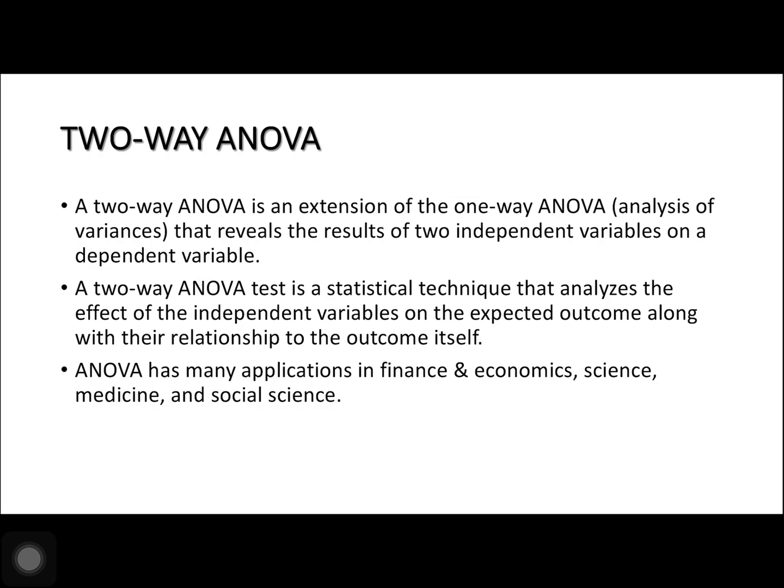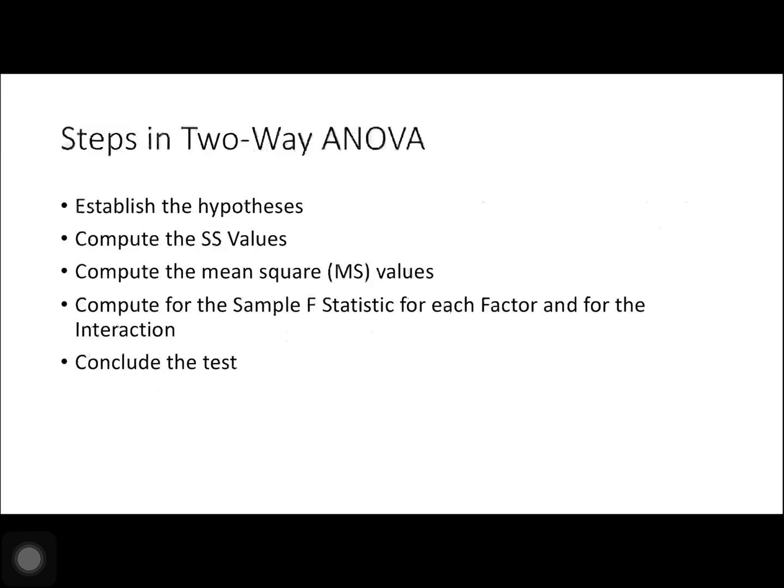The topic for today is two-way ANOVA. A two-way ANOVA is an extension of the one-way ANOVA, or analysis of variance, that reveals the results of two independent variables on a dependent variable. A two-way ANOVA test analyzes the effect of the independent variables on the expected outcome along with their relationship to the outcome itself. ANOVA has many applications in finance, economics, science, medicine, and social science.